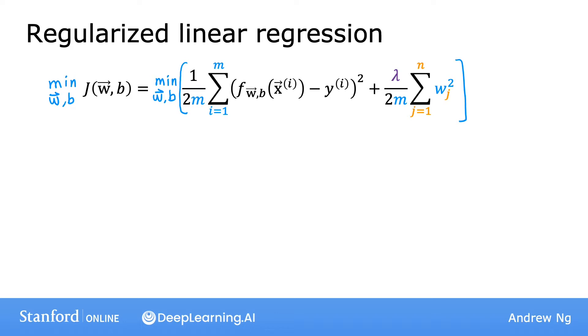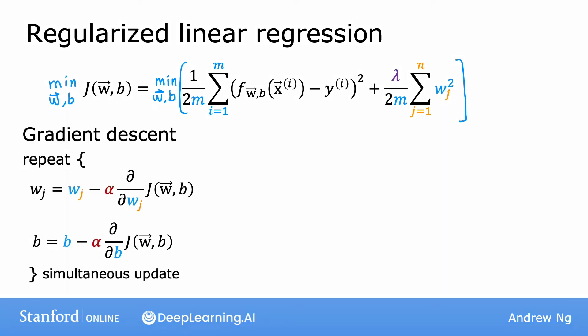Previously, we were using gradient descent for the original cost function, just the first term, before we added that second regularization term. And previously, we had the following gradient descent algorithm, which is that we repeatedly update the parameters w_j and b for j equals 1 through n according to this formula. And b is also updated similarly. Again, alpha is a very small positive number called the learning rate.